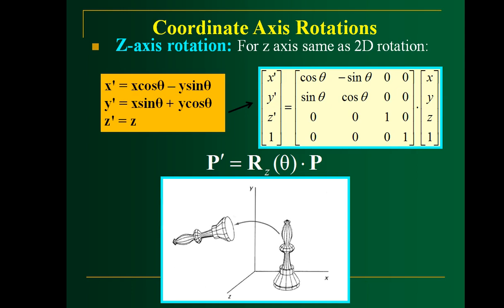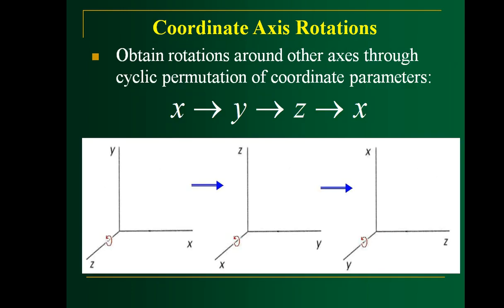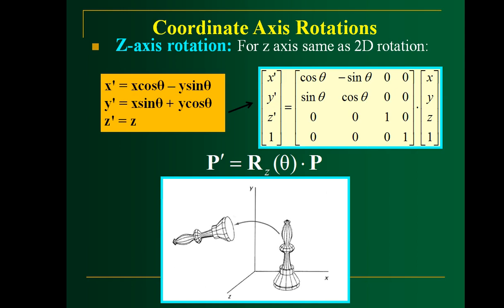Similar equations and matrices can be obtained for the other axes — X-axis rotation and Y-axis rotation — by using cyclic permutations. That is, wherever you find X change it to Y, wherever you find Y change it to Z, and wherever you find Z change it to X. For X-axis rotation, x' = x, y' = y·cosθ - z·sinθ, and z' = y·sinθ + z·cosθ.